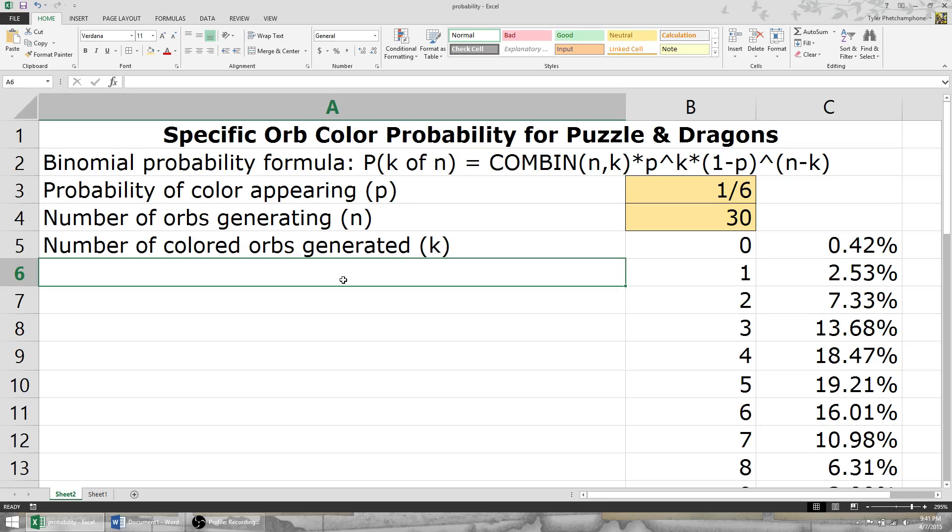And you want to know the probability of generating 17 or more fire orbs because you have a mono fire team with your Sonya, your red Sonya.